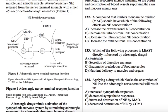Question: a compound that inhibits monoamine oxidase — MAO — should have which of the following effects on NE concentration? So if MAO breaks down NE, then whenever MAO is working you get low NE. So that means if you stop MAO from working, you're going to increase NE. That's pretty simple.